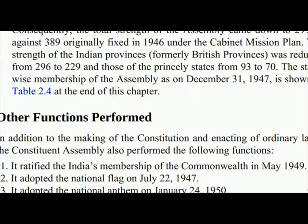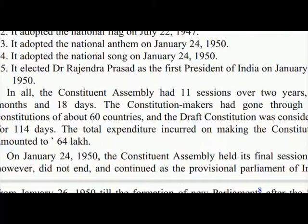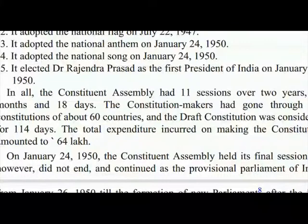The statewise membership of the assembly as on December 31, 1947 is shown in Table 2.4. In addition to making the constitution and enacting ordinary laws, the Constituent Assembly also: (1) ratified India's membership of the Commonwealth in May 1949; (2) adopted the national flag on July 22, 1947; (3) adopted the national anthem on January 24, 1950; (4) adopted the national song on January 24, 1950; (5) elected Dr. Rajendra Prasad as the first President of India on January 24, 1950. In all, the Constituent Assembly had 11 sessions over 2 years, 11 months and 18 days.